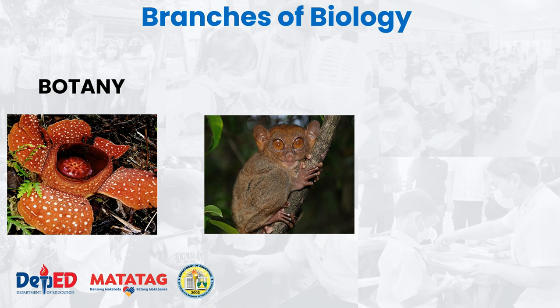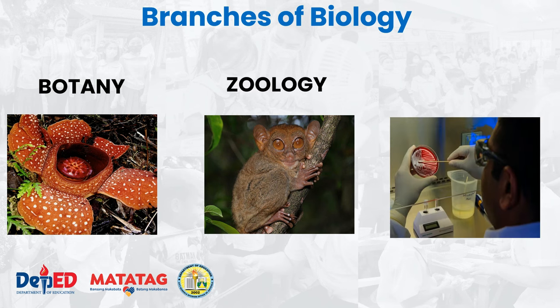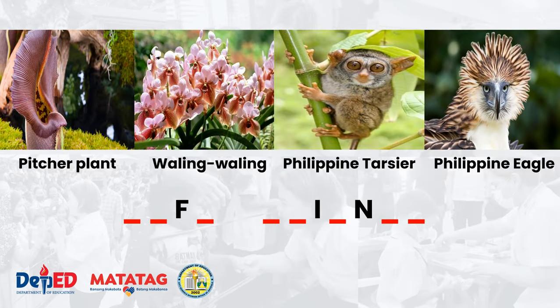What kind of animal is this? If you think this is a tarsier, that's correct — Tarsius syrichta, or the Philippine tarsier, a small brownish-gray mammal. This animal talks about the branch of biology in connection with zoology. Now we have another picture of a microbiologist having an experiment or getting a specimen from a certain virus or bacteria — that is microbiology.